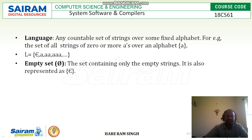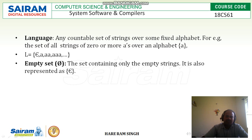Then, language. Any countable set of strings over some fixed alphabet is called a language. For example, the set of all strings of 0 or more symbols over an alphabet A can be defined as: null set, or A, or AA, or AAA — together this set is called a language. Next, the empty set is the set containing only the empty string, and it is denoted by epsilon.